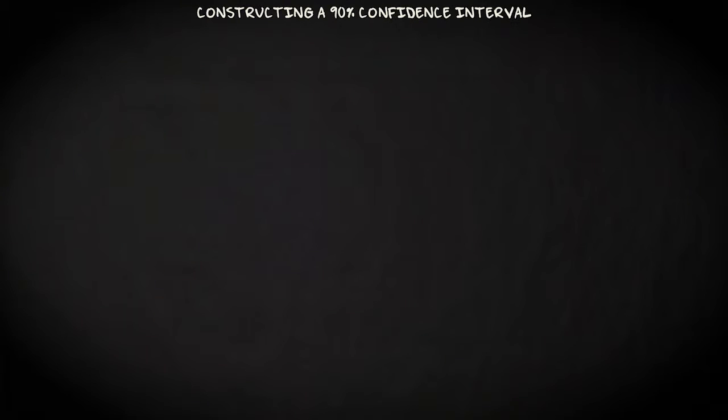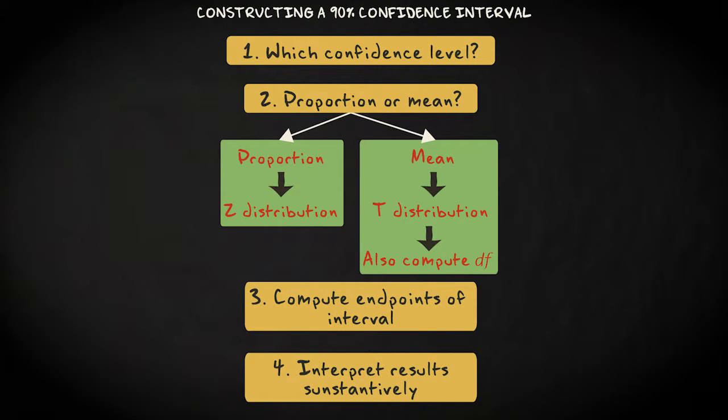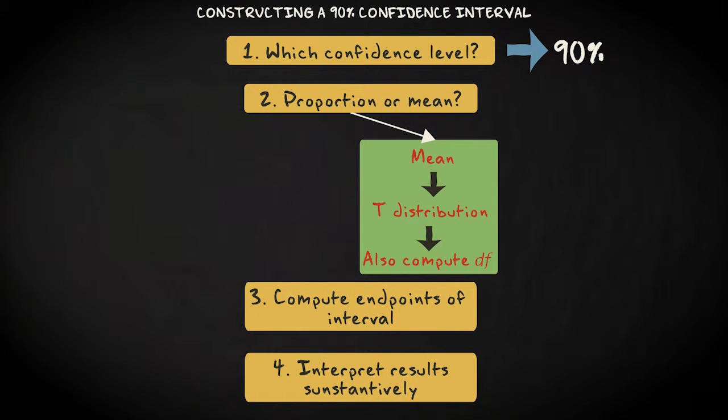I would like to construct a 90% confidence interval to estimate the population mean. Let's first look at the step-by-step plan for constructing a confidence interval. We already know the confidence level is 90%, and that we are dealing with a mean instead of a proportion.